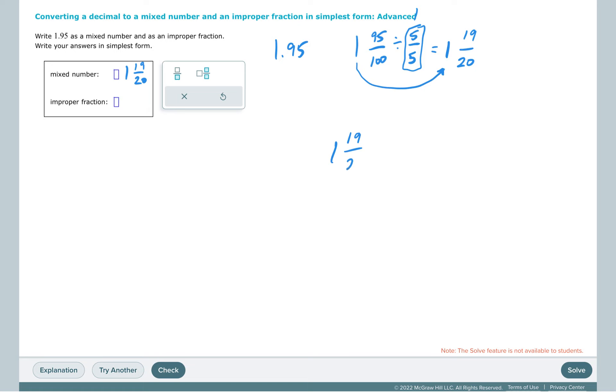To change 1 and 19/20ths to an improper fraction, we're going to take the whole number here, multiply it by the denominator. So we're going to do 1 times 20, it's 20, plus the 19/20ths that we had left over. So we have 20 plus 19 is 39 twentieths. So our improper fraction is 39 over 20.